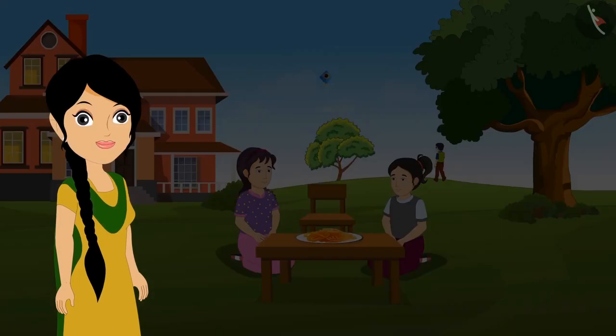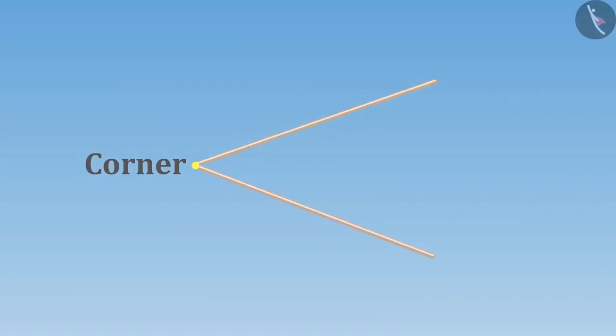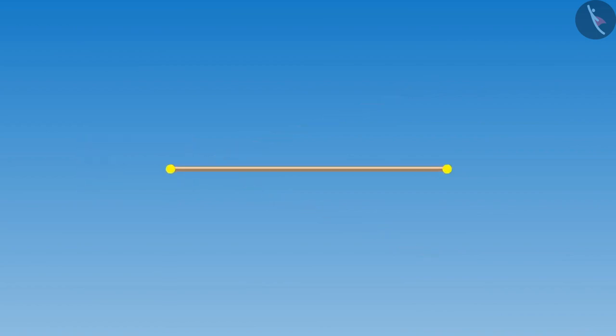Do you know what are corners? Look here Riva, if I join two sticks like this, what appears in between is called a corner. But if I take one stick, there will be two end points on it, which means there would be no corner there.